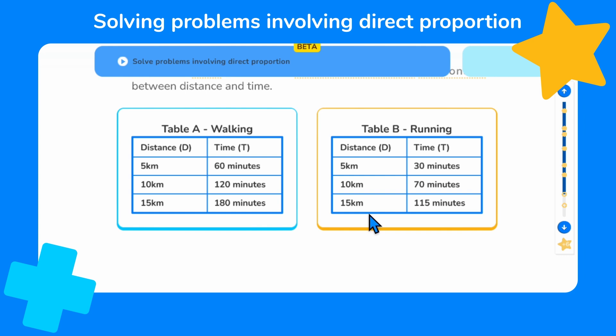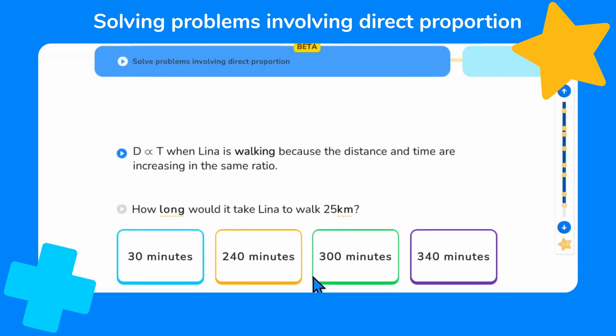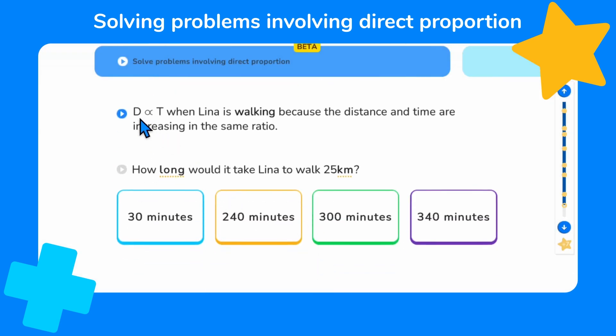This means that table B must not show a directly proportional relationship. We're told that distance D is directly proportional to time when Lena is walking, because the distance and time are increasing in the same ratio. The final part of this lesson asks us to calculate how long it would take Lena to walk 25 kilometres. Remember, we multiplied each distance by 12 to calculate the time it took Lena to walk them, so we need to do the same with 25 kilometres. How long do you think it would take Lena to walk 25 kilometres, providing she continues to walk at the same pace?